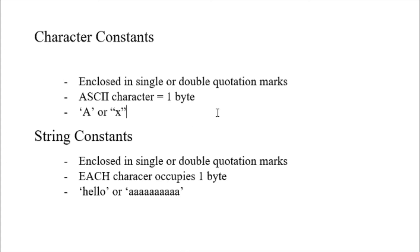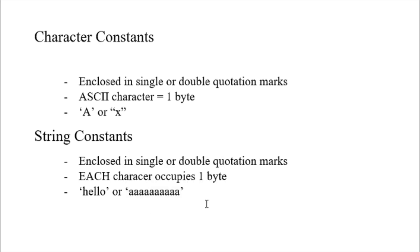Next, we have string constants. String constants are also enclosed in single or double quotation marks. Remember, each character occupies a single byte. For example, 'hello' has five characters, so it occupies five bytes. Or if you have the letter 'a' repeated ten times, that occupies ten bytes. Those are the key ideas for character constants and string constants.